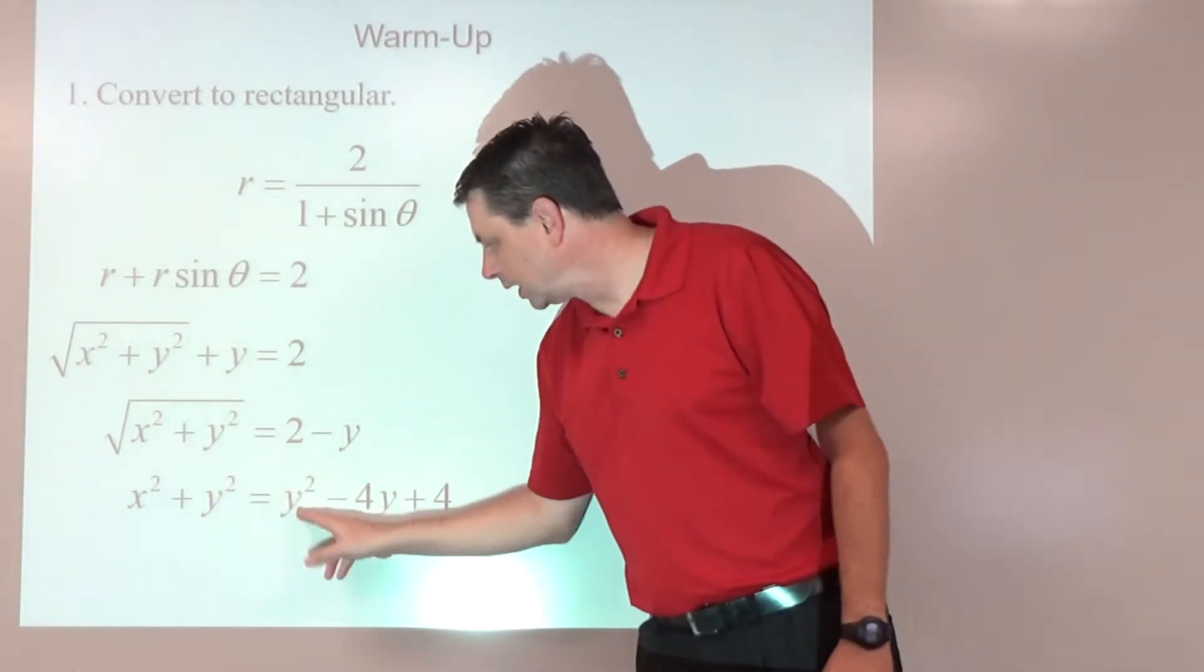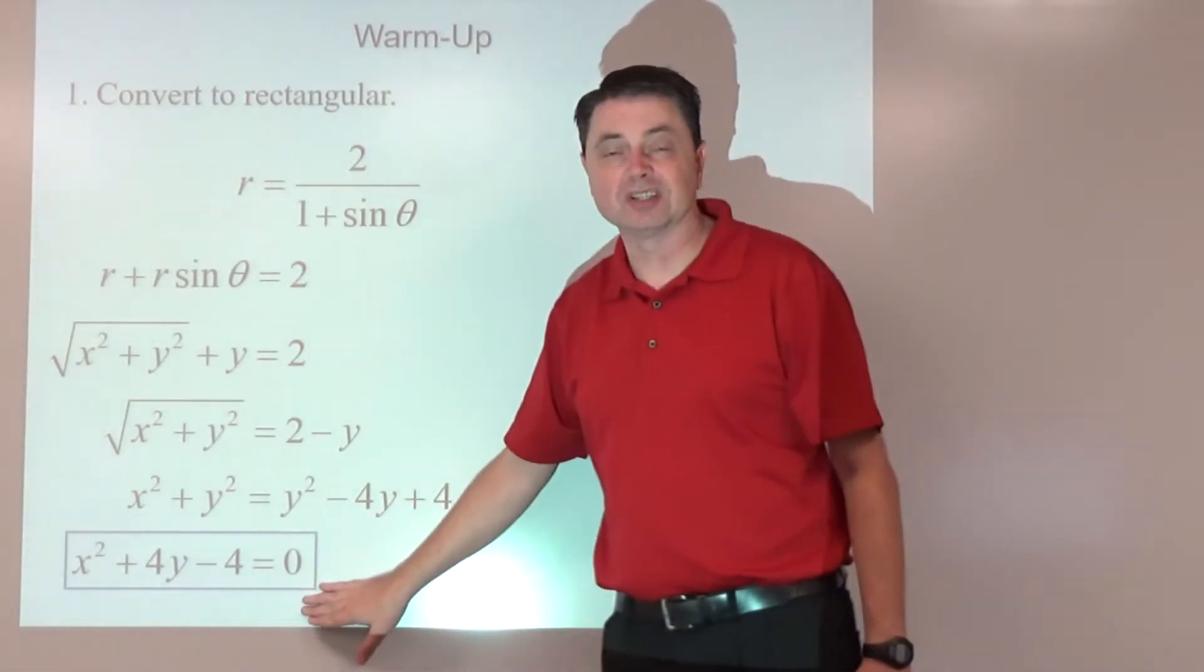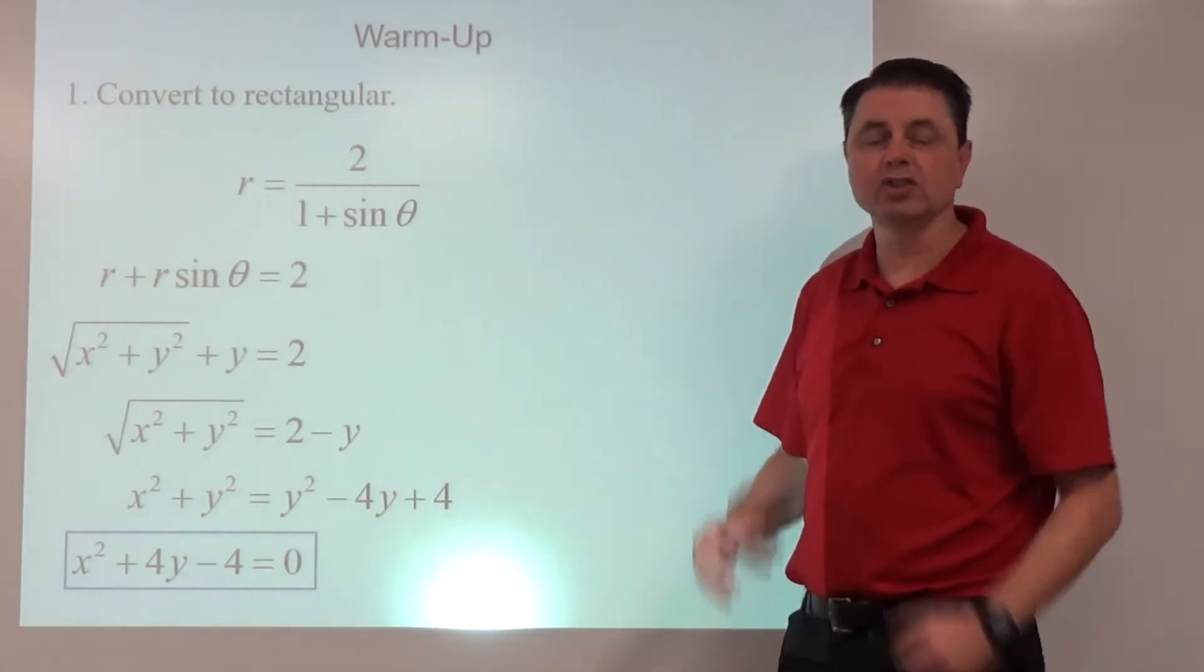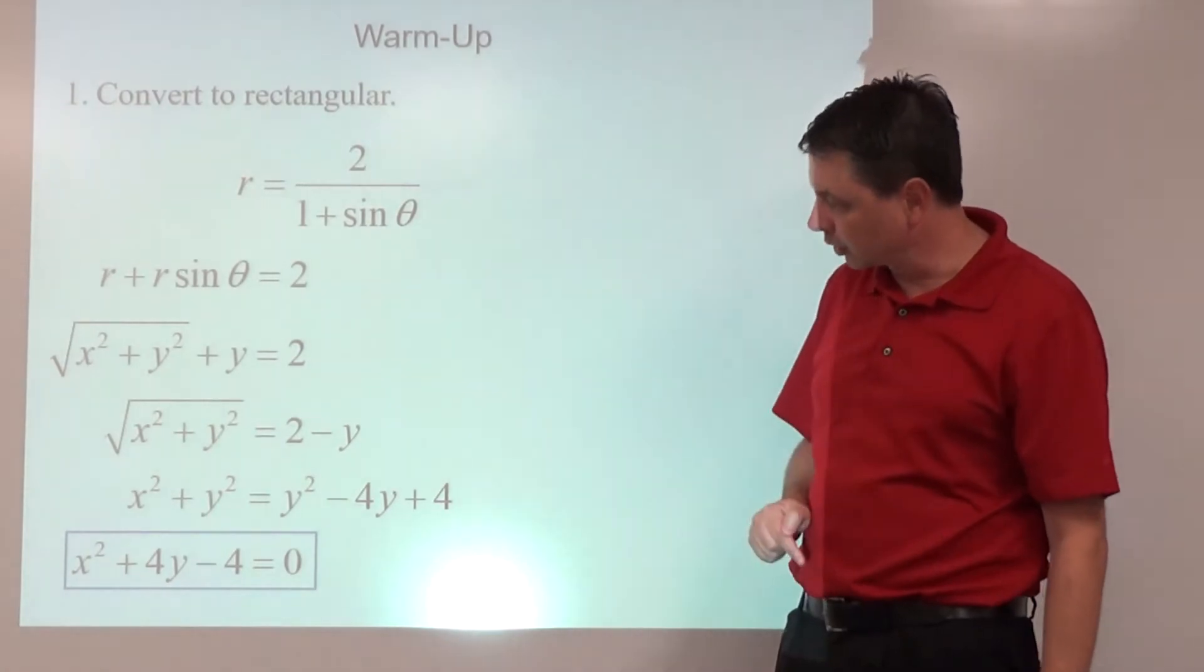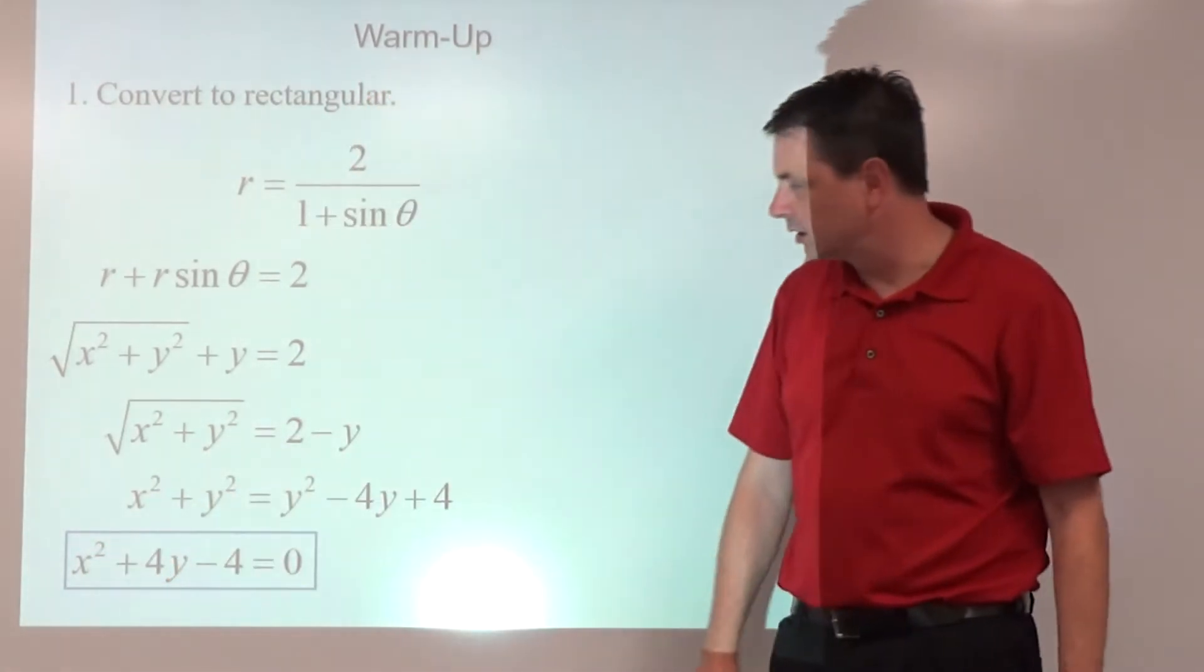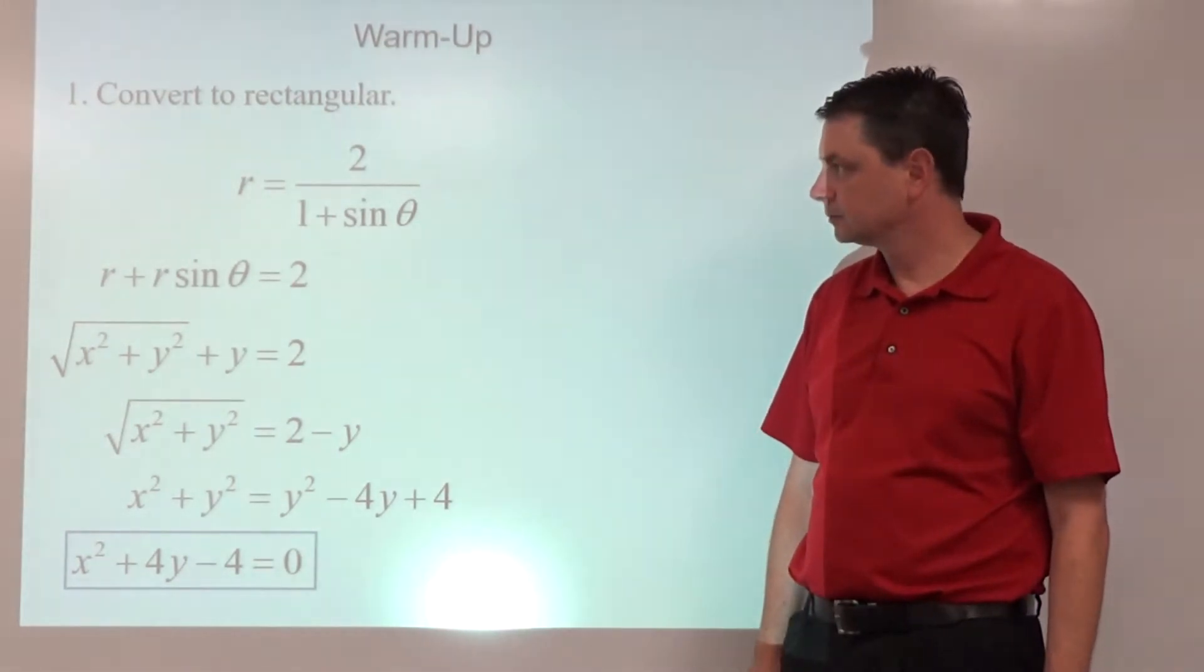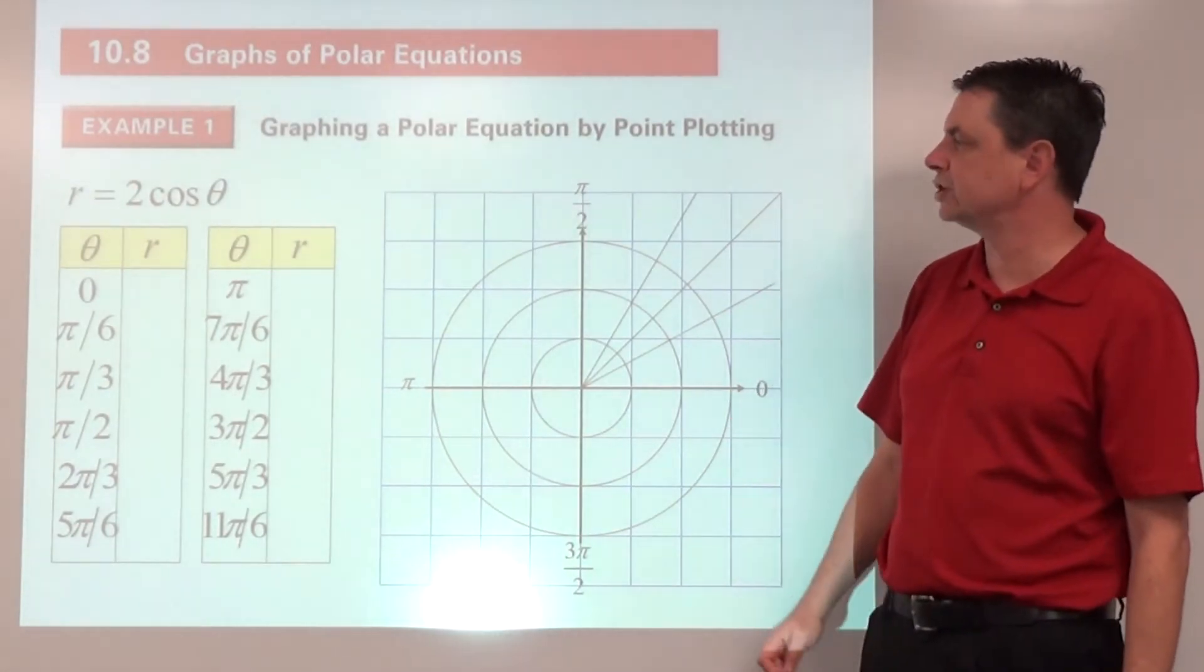Then if we want to put it in some form that makes sense, we do have y squared on both sides. It could cancel if we got it equal to zero. That would be a standard form or general form of a conic section. In particular, because it's got x squared and no y squared, we're looking at a parabola.